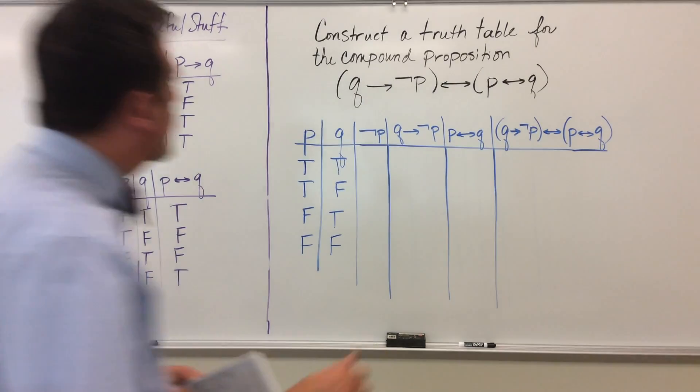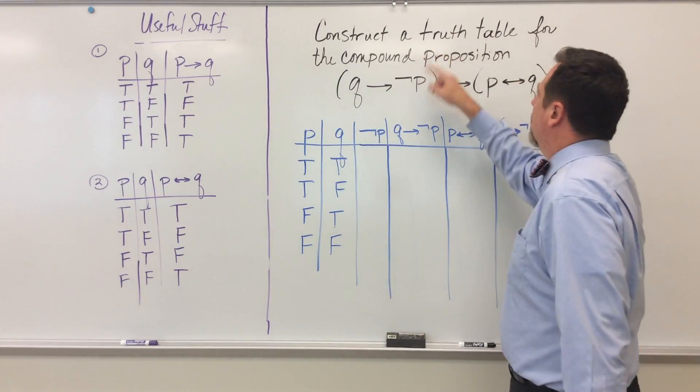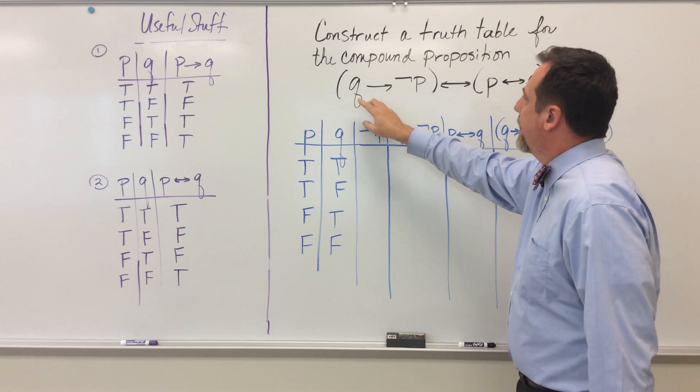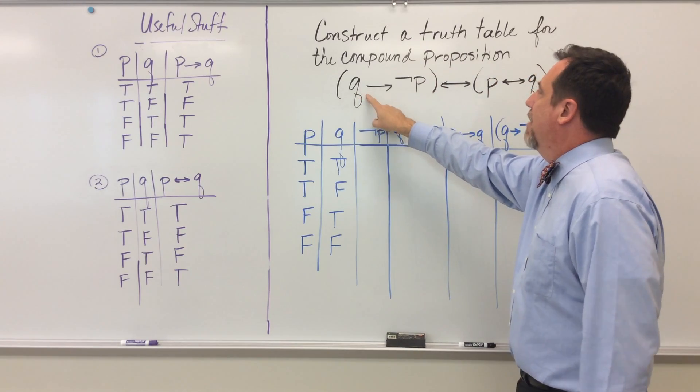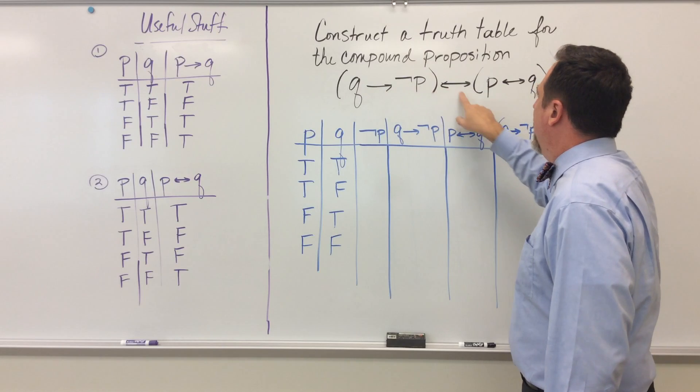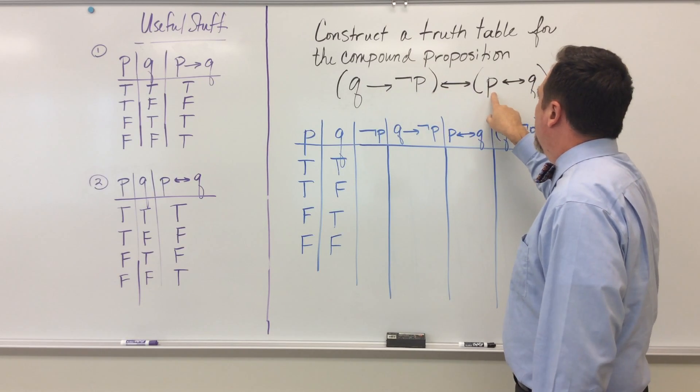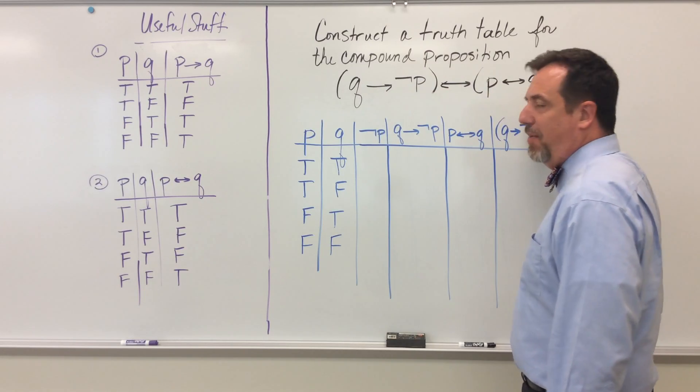Okay, so I'd like to construct a truth table for the compound proposition: if Q, then not P, if and only if P, if and only if Q.